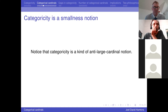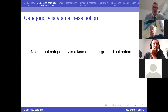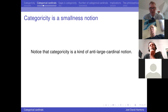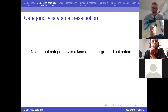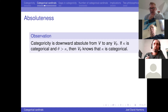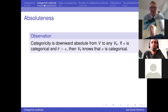I want to point out that categoricity is really an anti-large cardinal notion. We defined categorical cardinal — a kind of inaccessible cardinal — but we've observed it tends to be the small ones that are categorical and the larger ones that are non-categorical. In a sense, having non-categorical large cardinals is a larger large cardinal notion than having a categorical one. That's like a failure of reflection, exactly. The smallest ones are categorical and the largest ones are not.